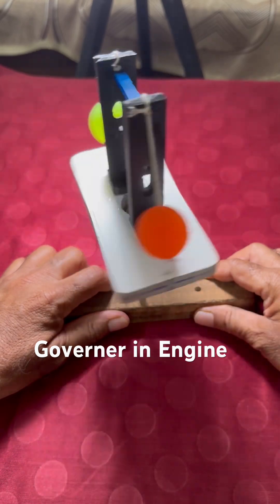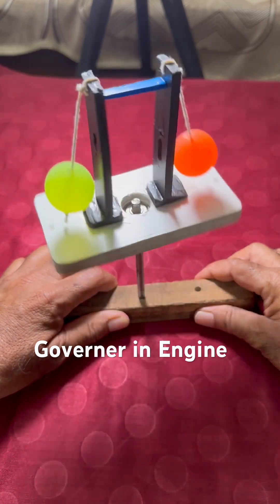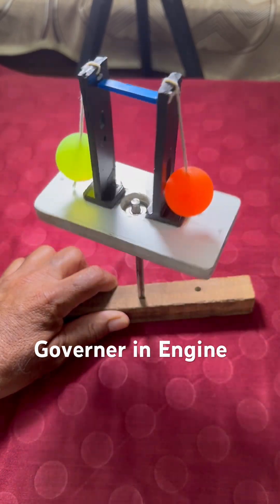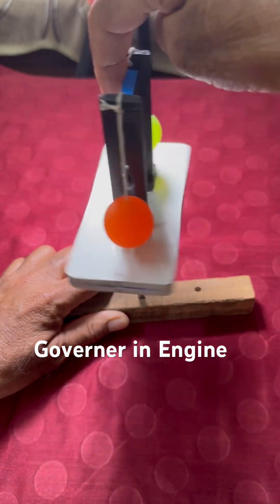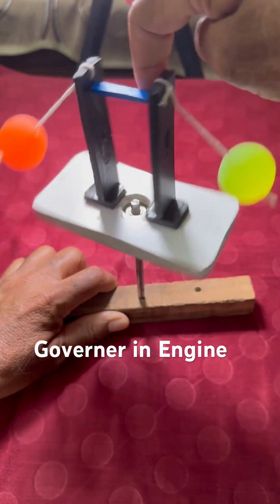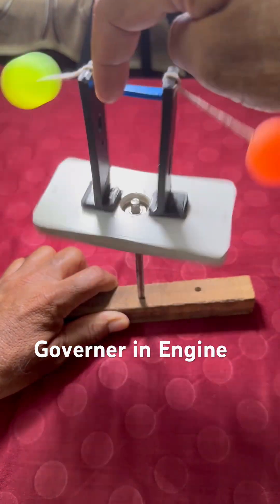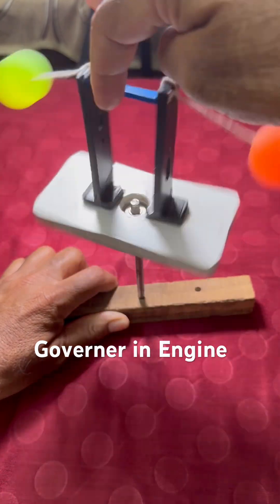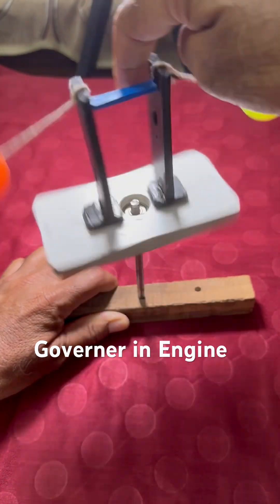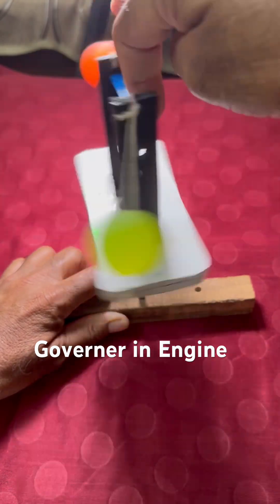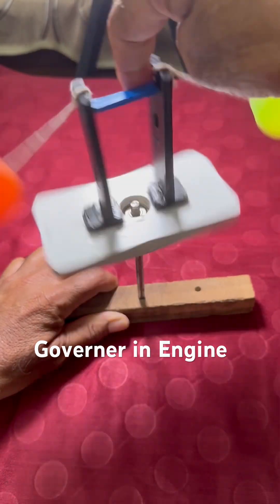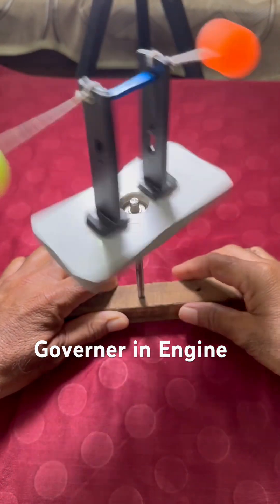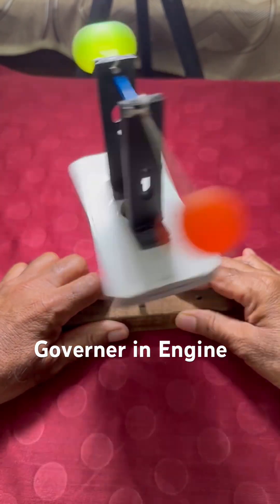And the concept behind this arrangement is centrifugal force. When the system moves, centrifugal force takes the balls out from the vertical position to almost horizontal position, and thereafter when speed reduces, you will observe they come vertical.